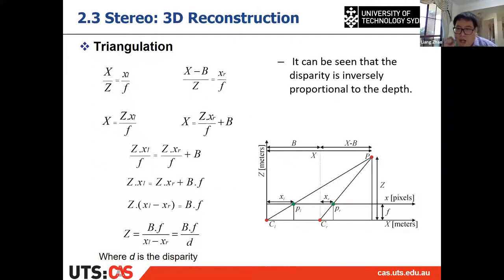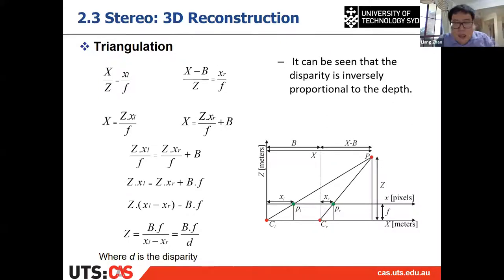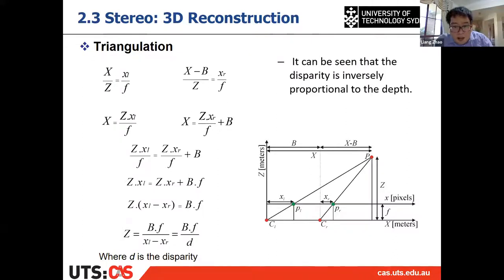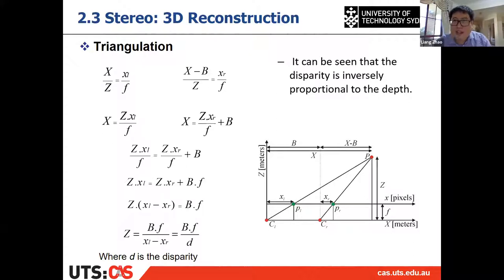Any questions about triangulation? The triangulation is super important because stereo cameras are very commonly used, and the whole point of using a stereo camera is to get the depth of the pixels. This is how to recover the depth — how to calculate the 3D location of a feature.